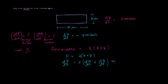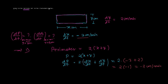Now let's put the values. dx over dt is minus 3, and dy over dt is plus 2. So it's 2 times (minus 3 plus 2) equals 2 times minus 1, which gives minus 2. So dp over dt equals minus 2 centimeters per minute.